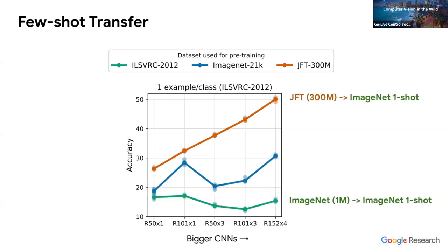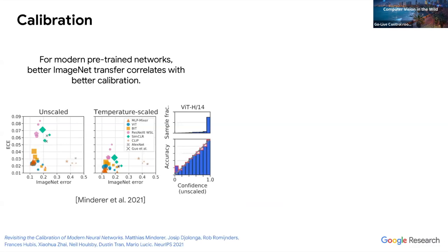If you thought the two models would perform similarly, you'd be roughly right at the smaller scale but not at all at the bigger scale. For a ResNet-50 size architecture, the JFT-trained model performs a bit better than the ImageNet model. But as the architecture grows, ImageNet-to-ImageNet transfer doesn't improve at all, while transfer from the larger noisier dataset to ImageNet improves a lot. So data is really key to training powerful representations, even when it's noisier than a smaller perfect dataset.